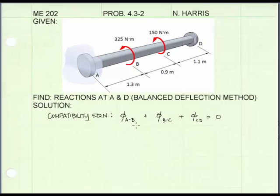Obviously, some will be in the positive direction and some will be in the negative direction. Now, I've drawn a free body diagram of the member. And you can see that I've replaced the wall with some reaction torques, one at A and one at D. And I also have the external torques applied, 325 newton meters and 150 newton meters. So I'm going to assume the reactions are in the opposite direction to the applied torques.